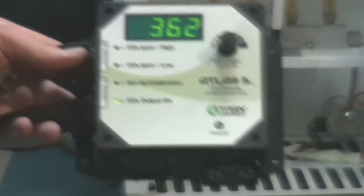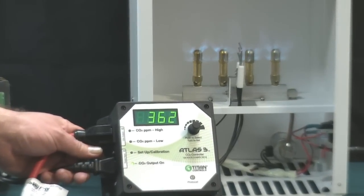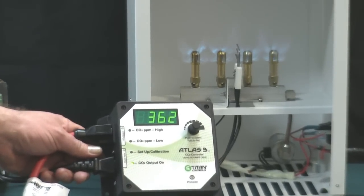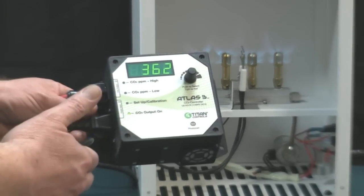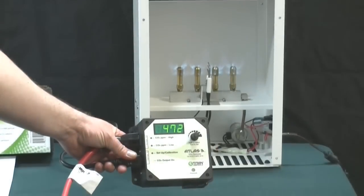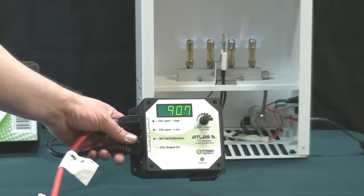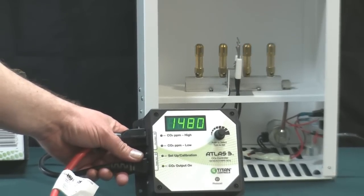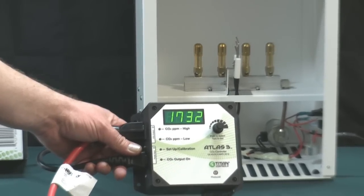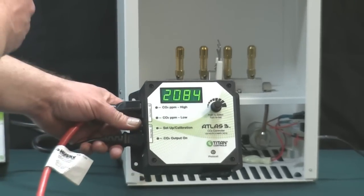Let me show you how this works. Right now, as you can see, the generator is active and is 362 parts per million. If I blow into this and take the parts per million over my set point, watch what happens. As you can see, the CO2 is raising. Now, you see we've exceeded our set point and it's defeated the CO2 generator.